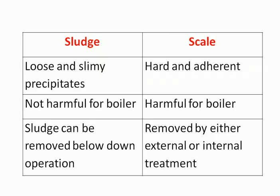What is the difference between sludge and scale? Sludge is loosely and slimly precipitated, while scale is a hard adherent coating on the inner walls of the boiler. Sludge is not harmful to the boiler, but scale is harmful due to its effect on heat transfer. Sludge can be removed by the blow down operation, while scales are removed by either external or internal treatment of the boiler.